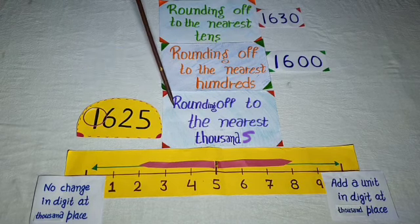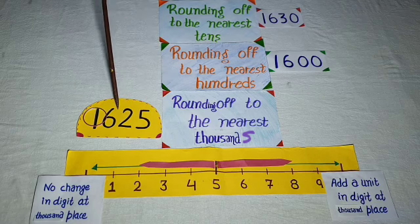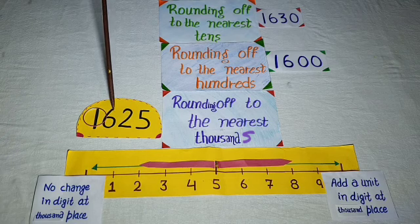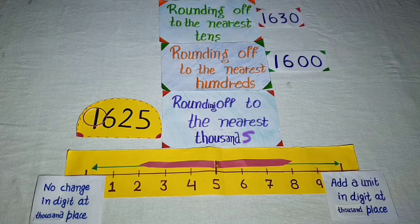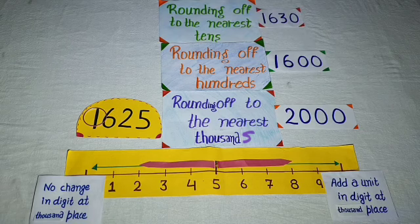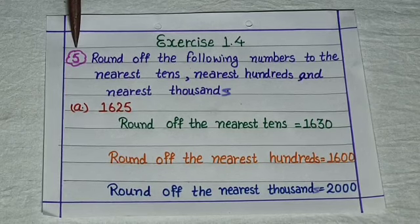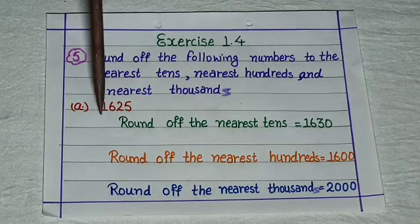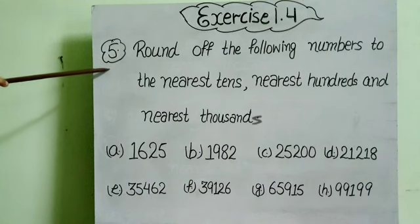If you want to round off to thousands, put three zeros to the right. Look at the hundreds digit — if it is 5 to 9, add a unit, and the number becomes 2000. Students, write question five in your notebook and solve part A like this. Solve the remaining parts of question five yourself in your notebook. Thank you.